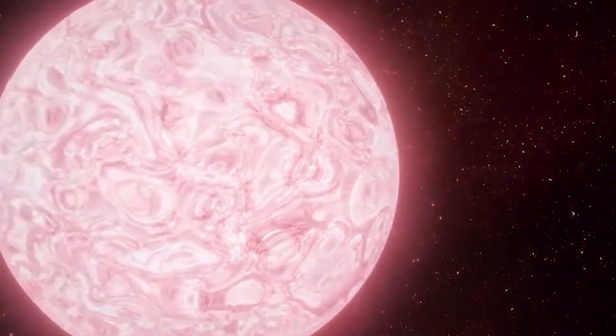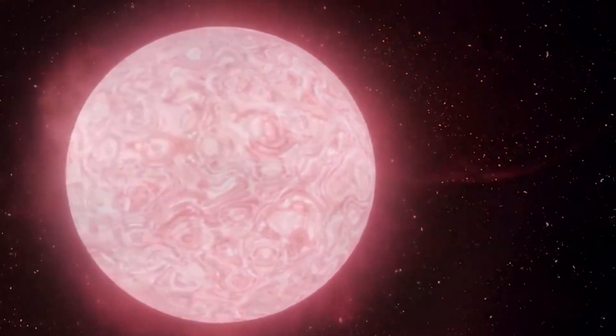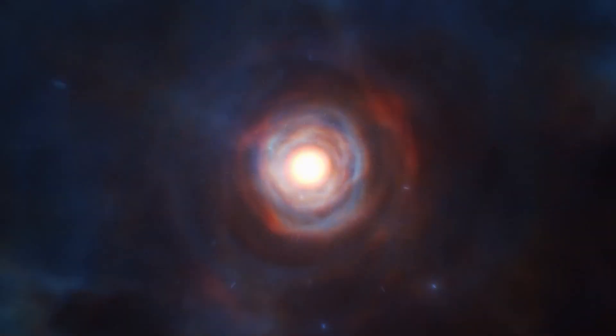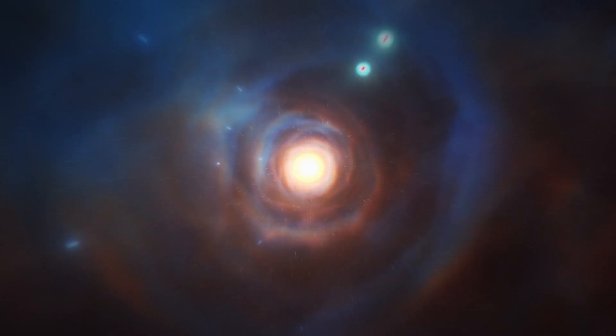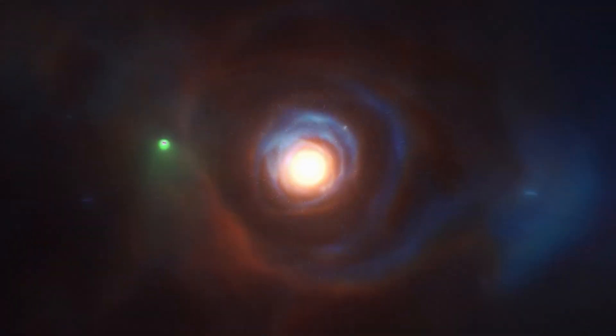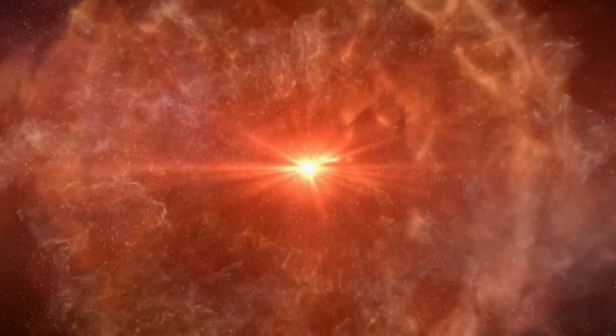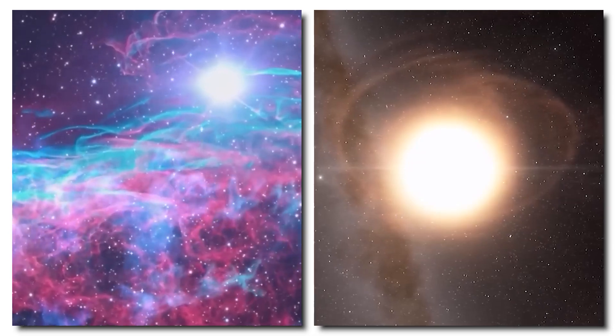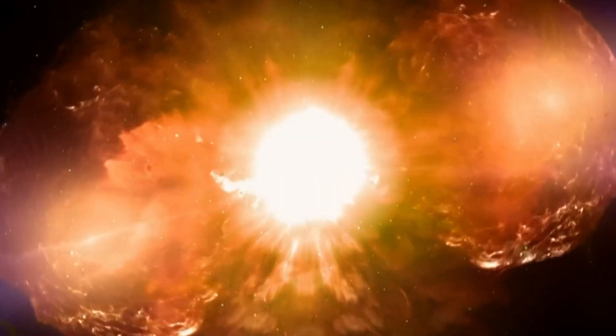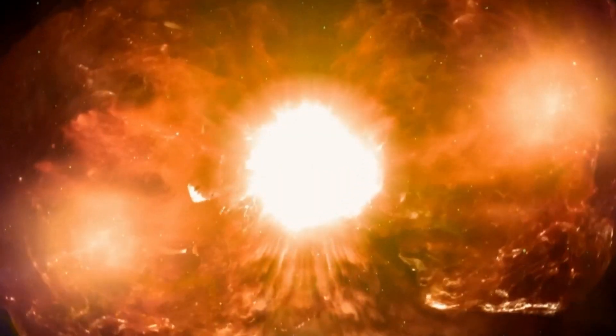These models don't just tell us when a supernova might happen. They also give us clues about what comes next, like the formation of neutron stars and black holes. A key question for scientists has been figuring out what exactly triggers supernova explosions in red supergiants. Since Betelgeuse is relatively close to Earth, it offers a rare chance to study this process in detail. If this recent brightness surge is a sign that a supernova is coming, astronomers might be able to capture the buildup in real time, which would provide invaluable data about how these stars explode.